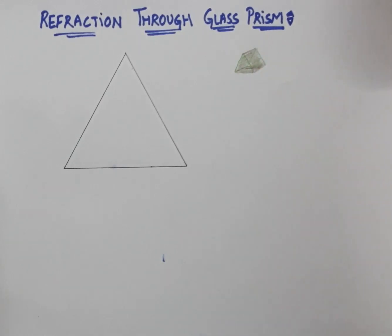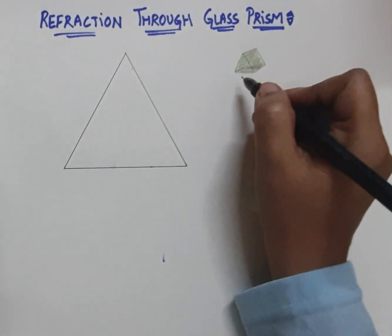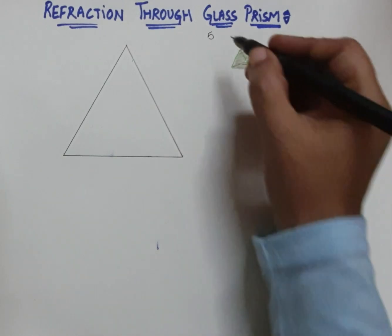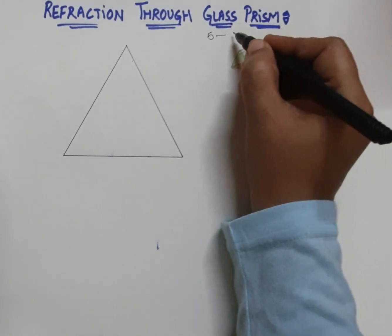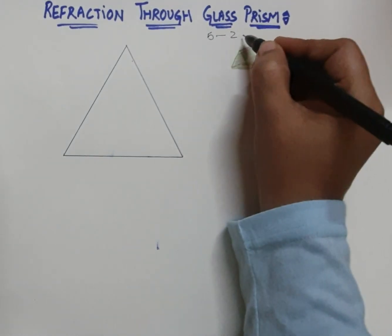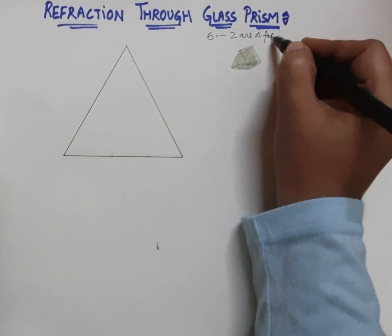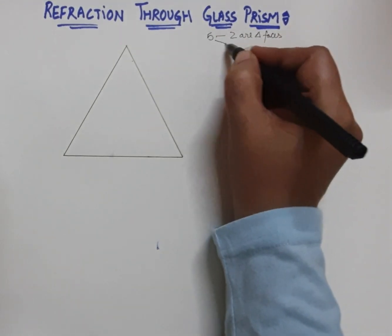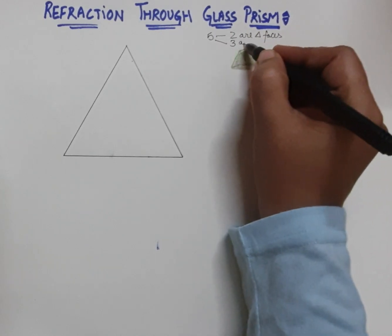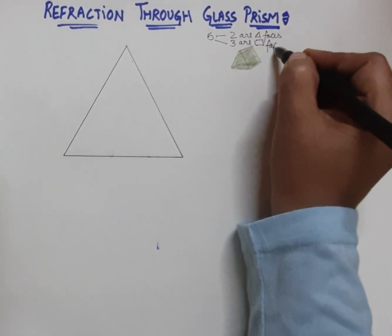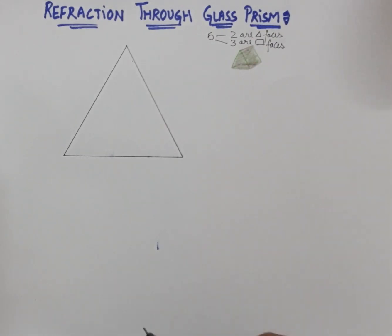So this is the 3rd face. That means in a glass prism there are 2 triangular faces and the remaining 3 are rectangular faces.